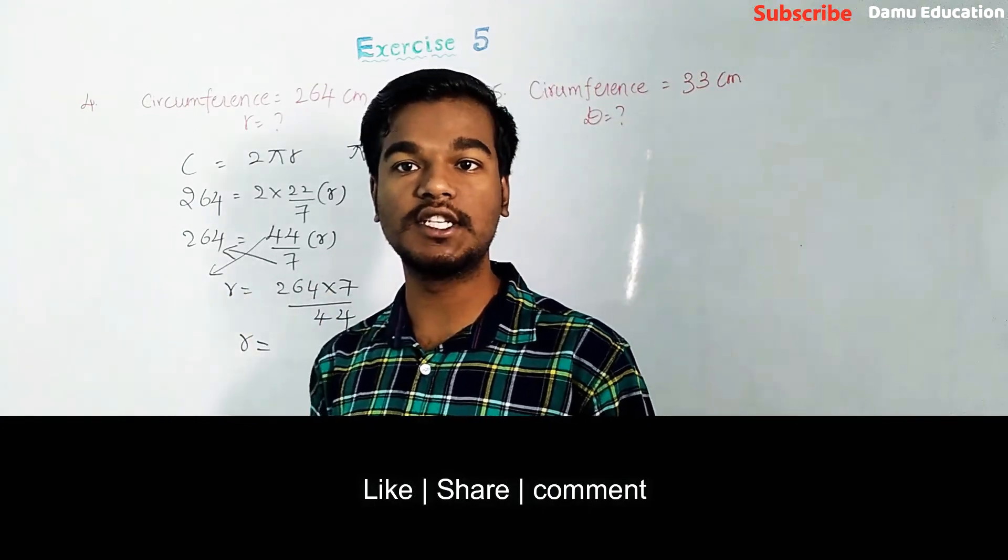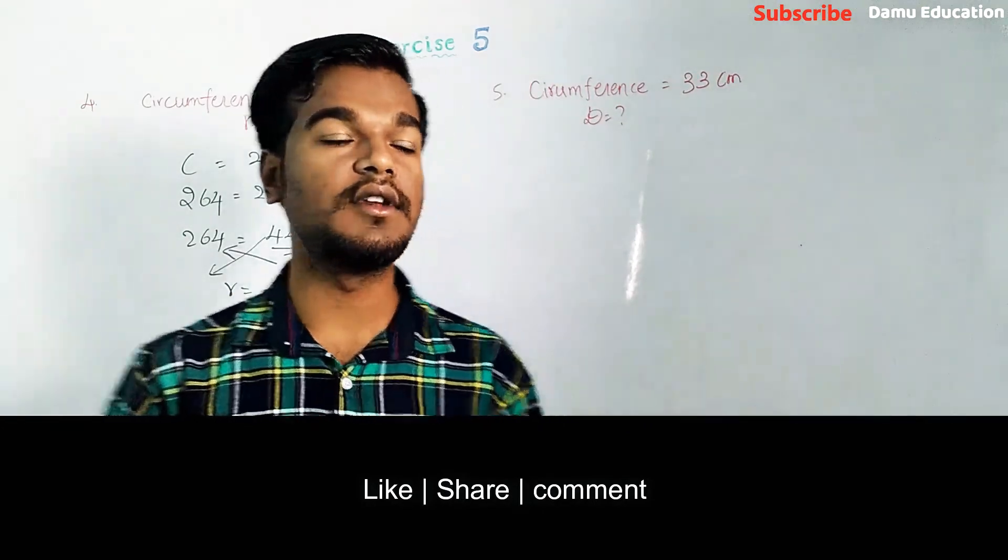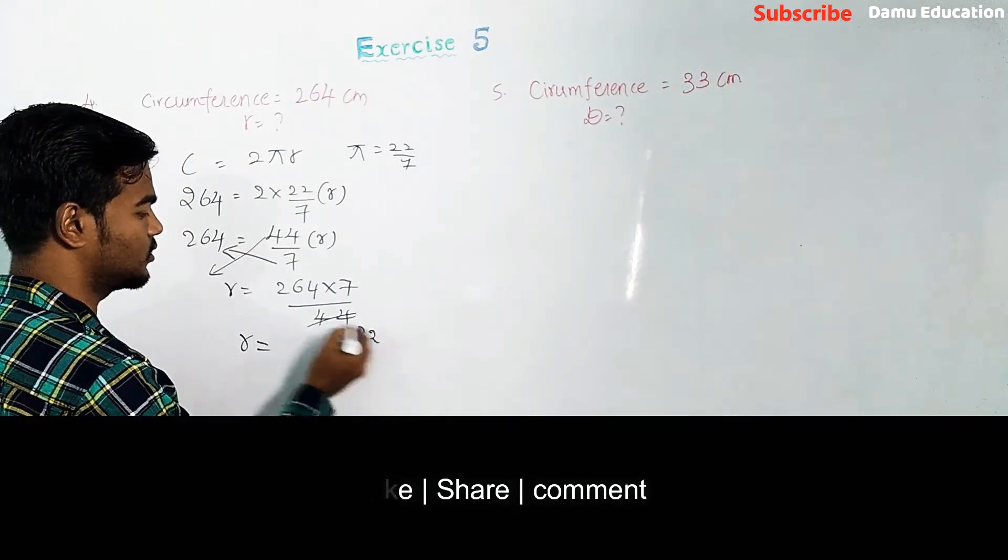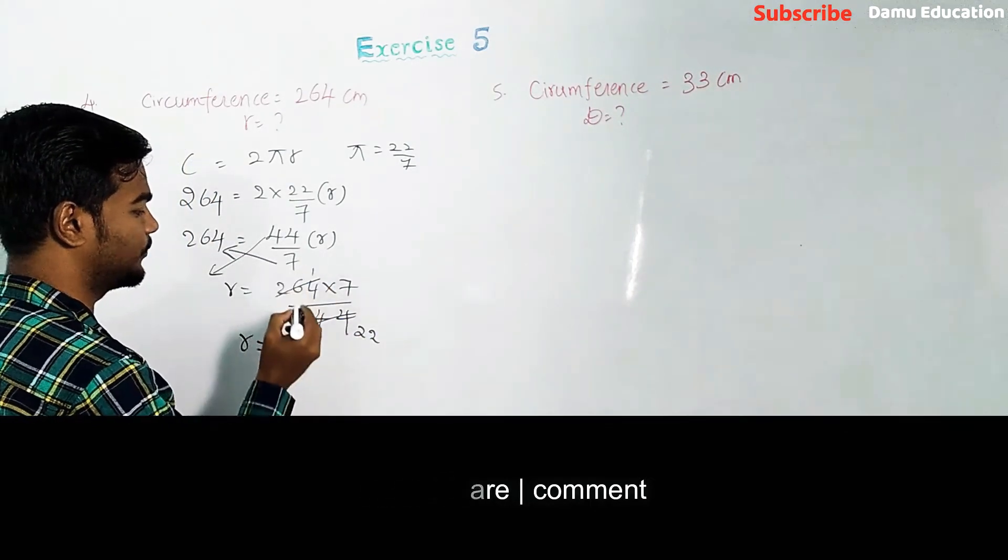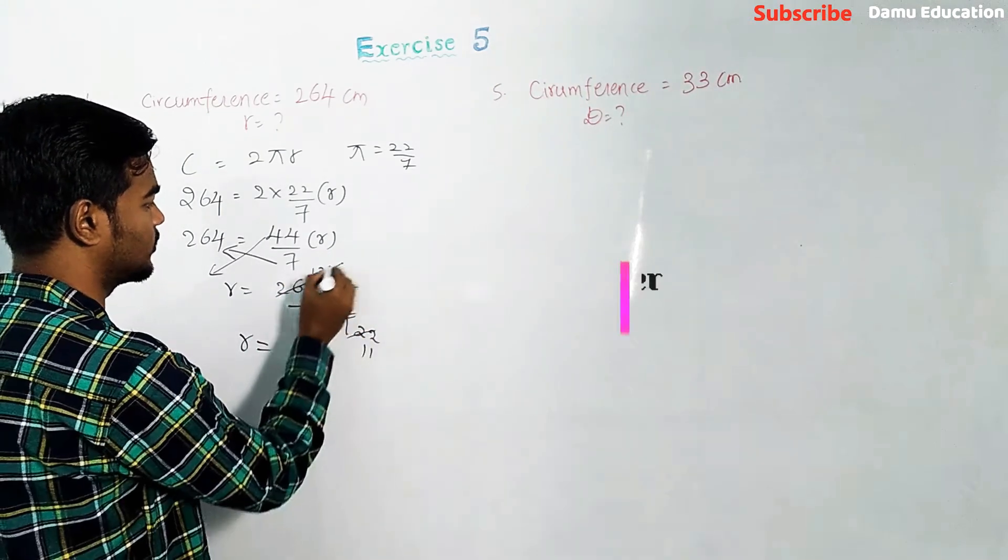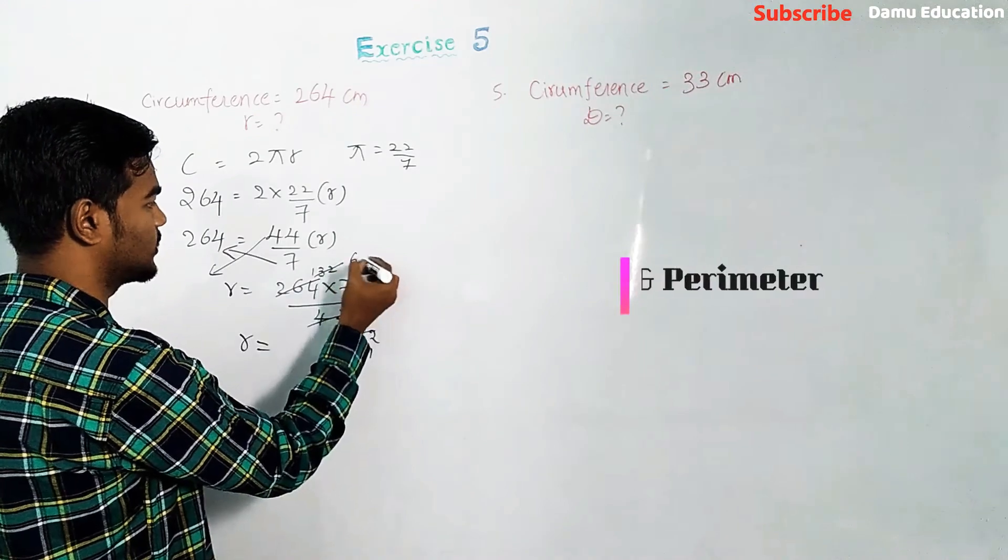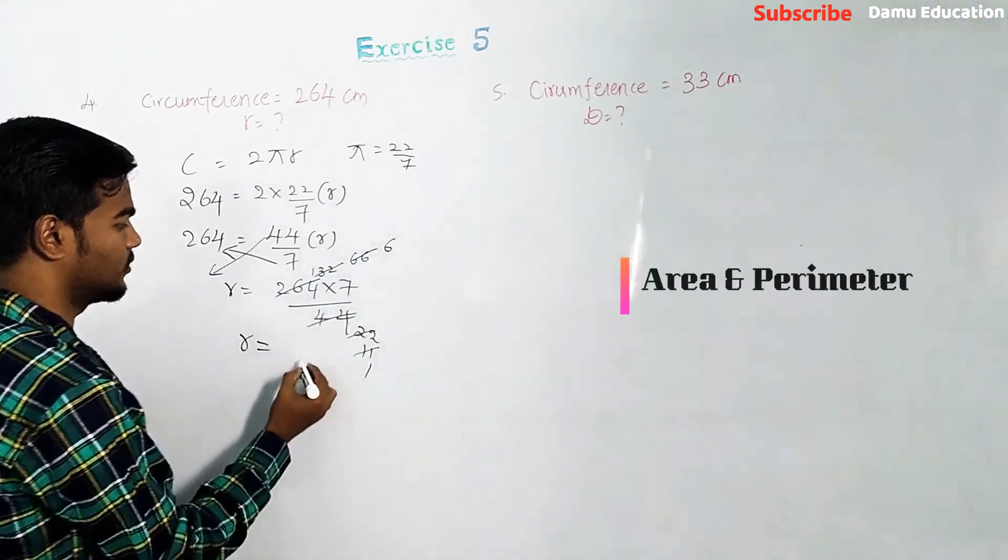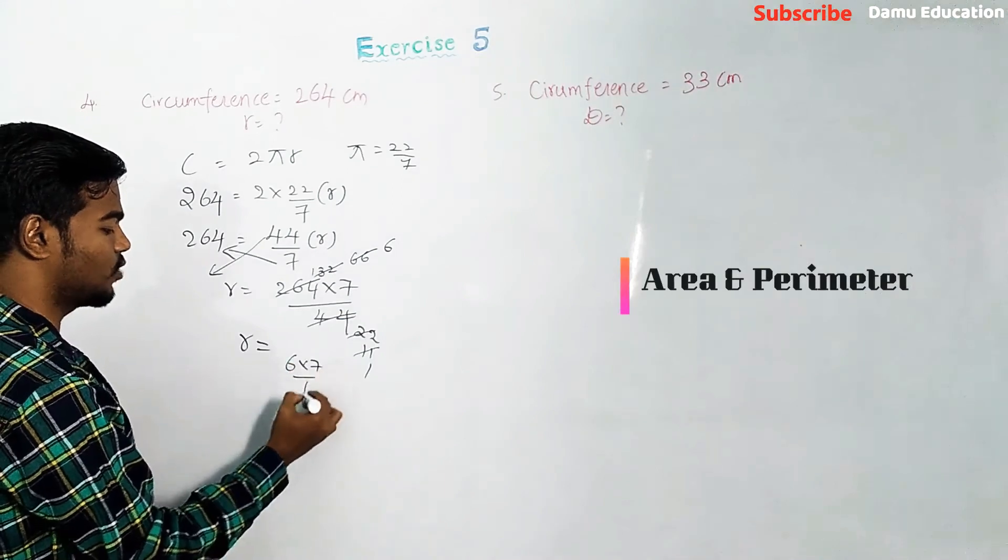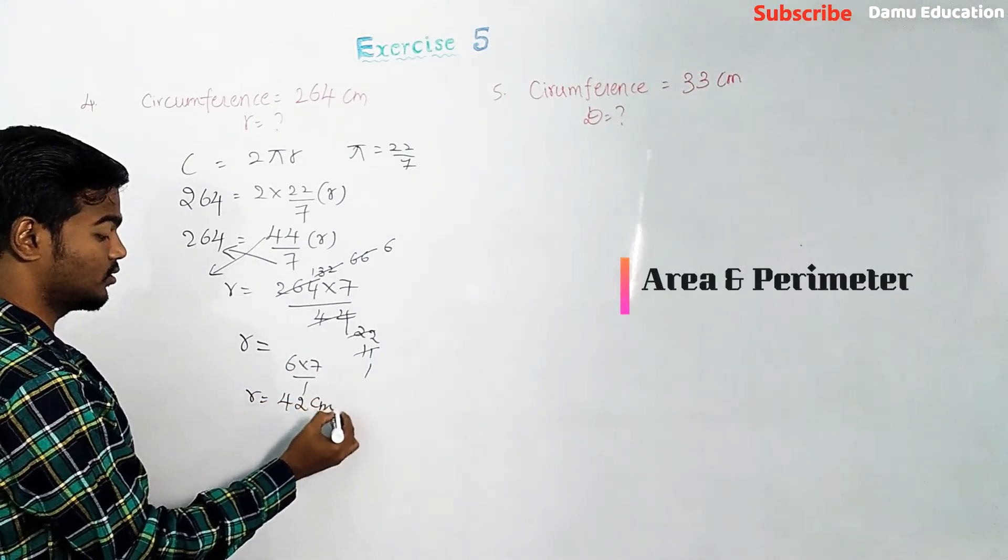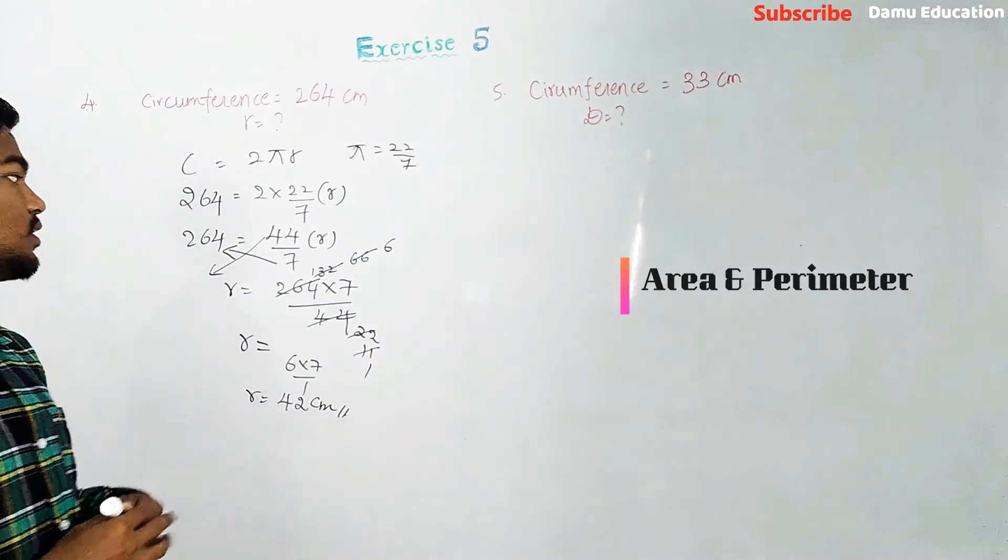Simplifying: 44 divides into 264, and we can simplify further. Six sevens are 42. So radius equals 42 centimeters. Like this we need to solve.